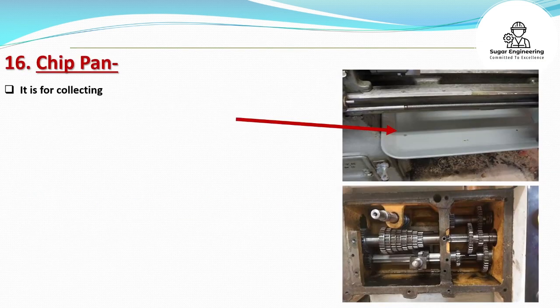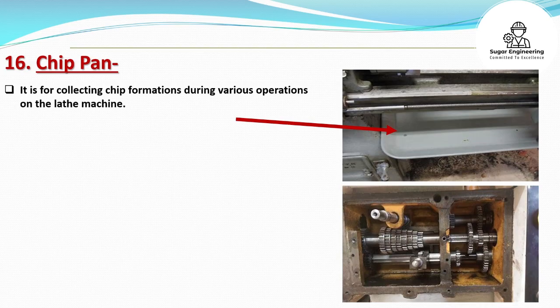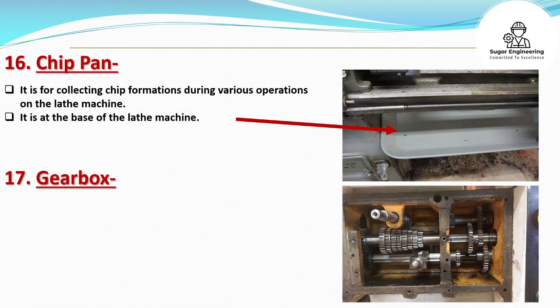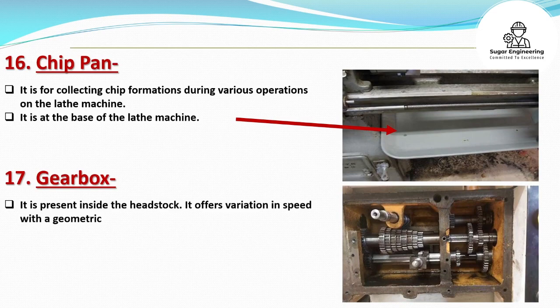The chip pan is for collecting chip formations during various operations on the lathe machine. It is at the base of the lathe machine. The gearbox is present inside the headstock. It offers variation in speed with a geometric ratio as per requirement by moving a lever.